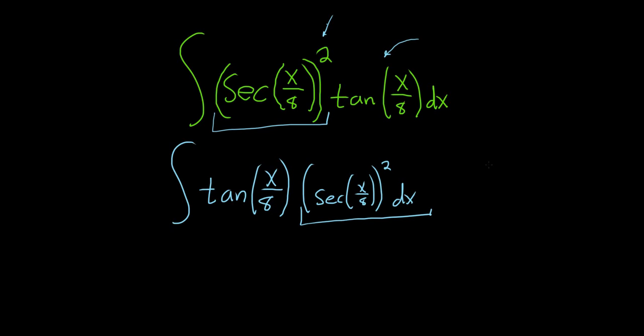Okay, so we've essentially saved a copy of secant squared. So once you save a secant squared, you always let u be equal to your tangent function. So u is equal to the tangent of x over 8.